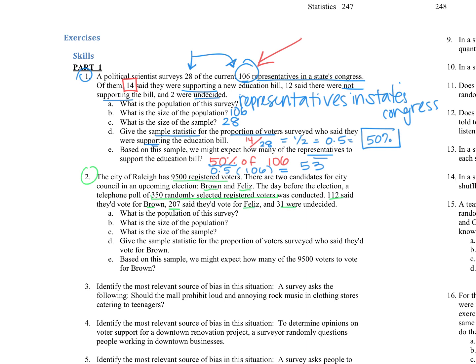So the population of this survey is those 9,500 people. So that's our size. And what are those people? They are registered voters. So it's all of the registered voters that are in that city of Raleigh. So our sample is that little telephone poll. So there's 350 people that were in that sample.